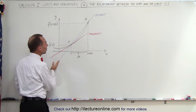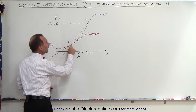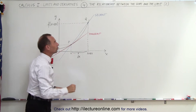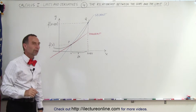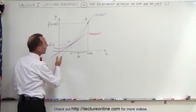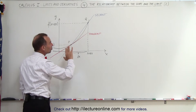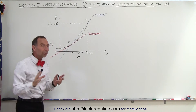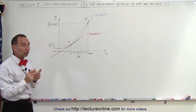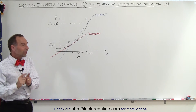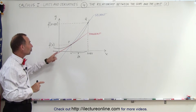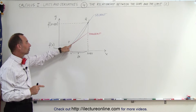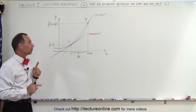We also drew a secant line which goes through point P and some other point of the function — let's call it point Q. We can see that the slope of the secant line is close to the slope of the tangent line, but not quite. The slope of the tangent line equals the slope of the function only at the one point where the tangent line touches the function, here at point P.